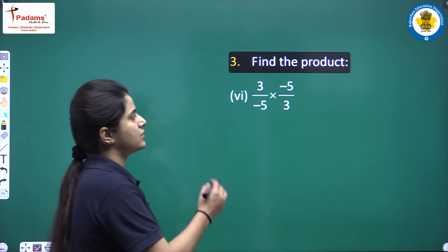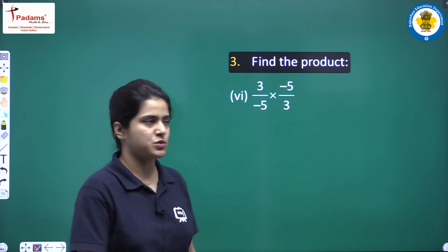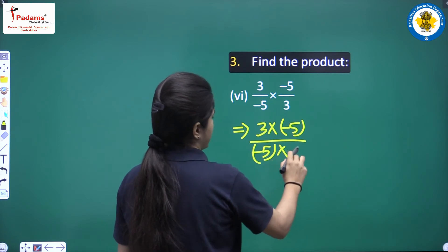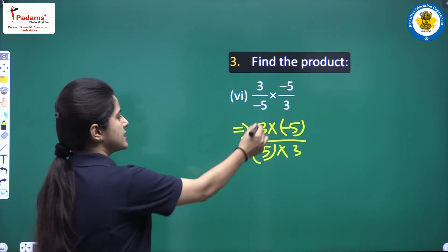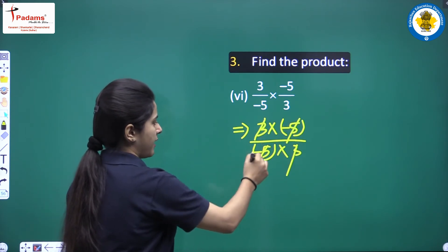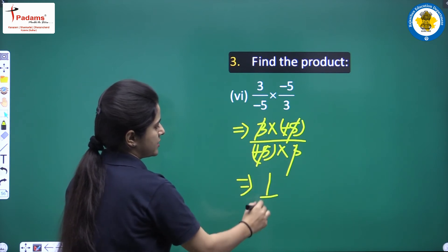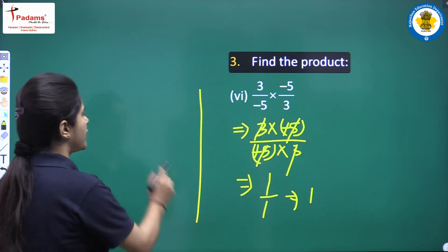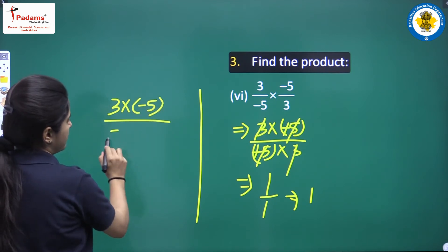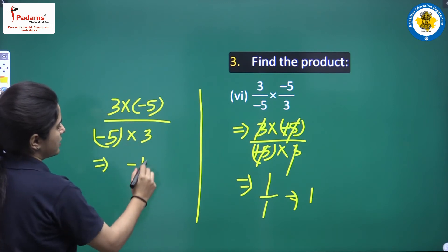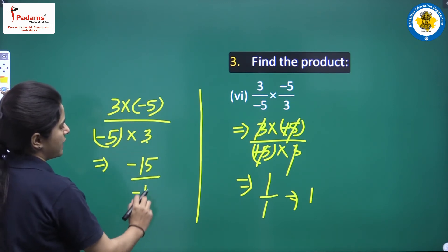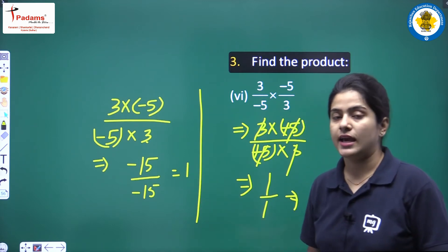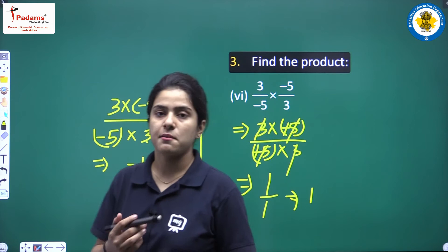Next question: 3 upon minus 5 into minus 5 upon 3. You have to multiply the numerators upon the product of the denominators. We can cancel out 3 from 3, 5 from 5, and minus from minus — 1 into 1 upon 1 into 1, so 1 upon 1, that is 1, is your answer. You can also do it the long way: 3 into minus 5 is minus 15, and minus 5 into 3 is minus 15. Dividing minus 15 by minus 15 gives 1. In this particular way, you can easily solve these questions.